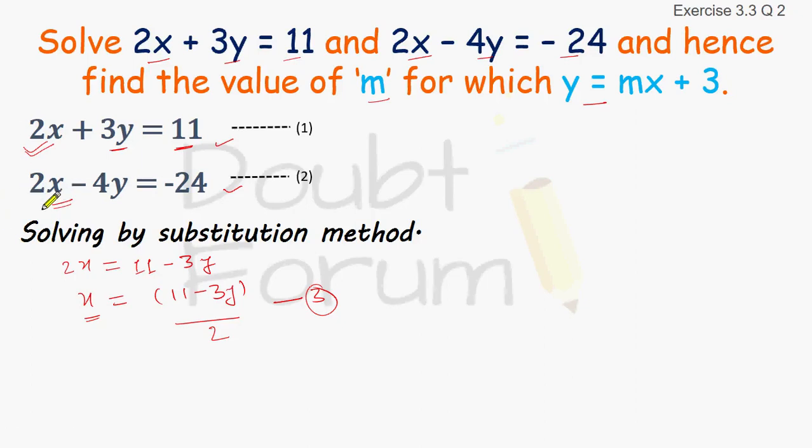So equation 2 is 2x minus 4y equals minus 25. We will put the value of x, which from equation 3 is 11 minus 3y upon 2, minus 4 into y. This equals minus 24.